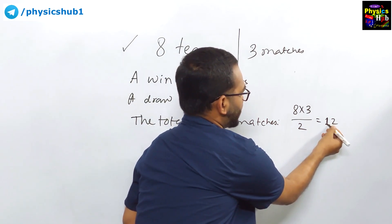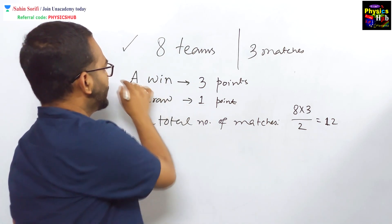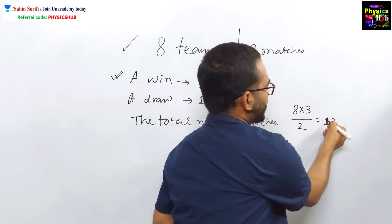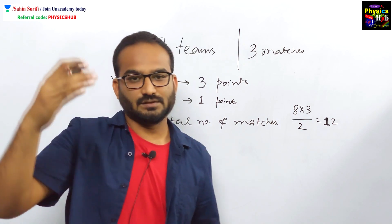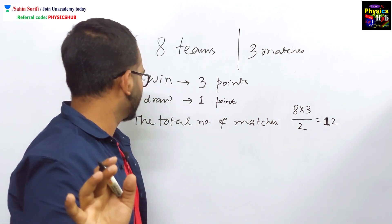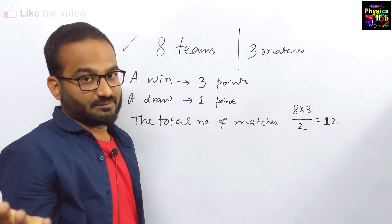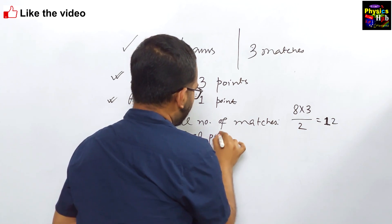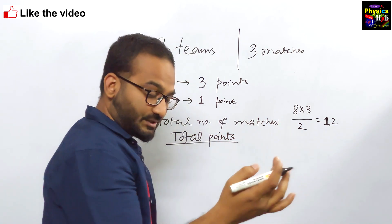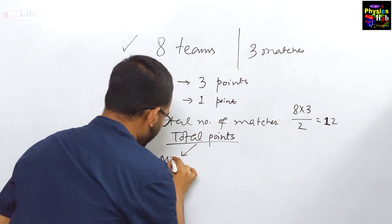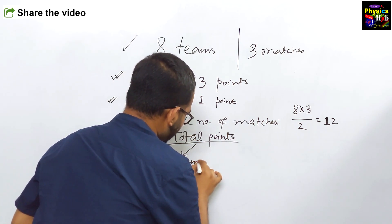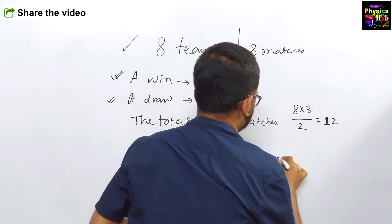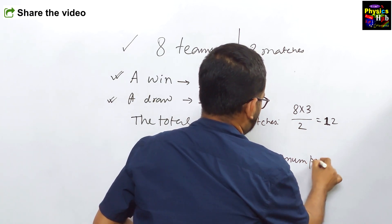So, if the points needs to be maximum, then this should be the situation. Like, these all 12 matches, there will be some team has won and some team has lost. For the draw situation, the total points will be minimum. So, the total points will be in the limit, in the range, there will be some minimum points to the maximum points.